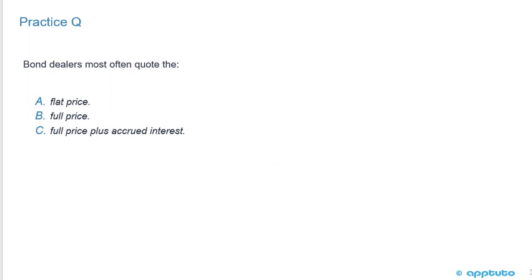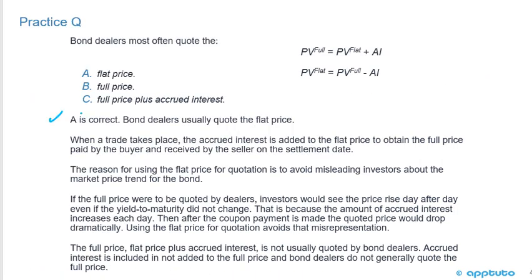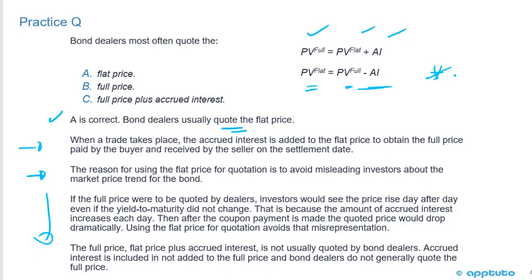A quick practice question: bond dealers most often quote the A) flat price, B) full price, or C) full price plus accrued interest. The correct answer is A — bond dealers usually quote the flat price. Remember: the full price equals the flat plus the accrued interest, and the flat price equals the full minus the accrued interest. When a trade takes place, the accrued interest is added to the flat price to obtain the full price paid by the buyer and received by the seller.